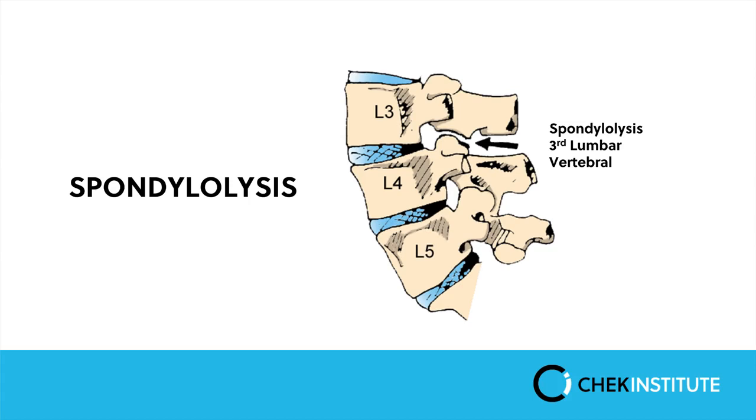Next is spondylolysis, which is a fracture that occurs to the pars articularis of the spine. It generally occurs lower down in the lumbar spine, particularly at L5, and occurs in around three to six percent of the population. It's typically caused by a stress fracture — particularly in people who go into excessive extension, such as tennis players, cricketers, and other sports involving a lot of extension, where repeated stress through the pars articularis eventually leads to fracture.